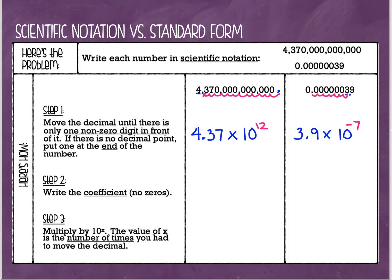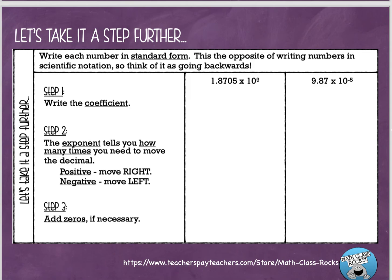All right, let's go the other direction now. So now what we are going to do is we are going to take numbers that are in scientific notation to begin with and write them in standard form. Now remember what we just said about the exponents. When you have a positive exponent, you're going to get a very large number. And when you have a negative exponent, you're going to get a very small number. So that's going to help remind you which direction to move the decimal point. All right, here we go. For step one, I'm going to write the coefficient. I'm just going to rewrite it. So 1.8705.